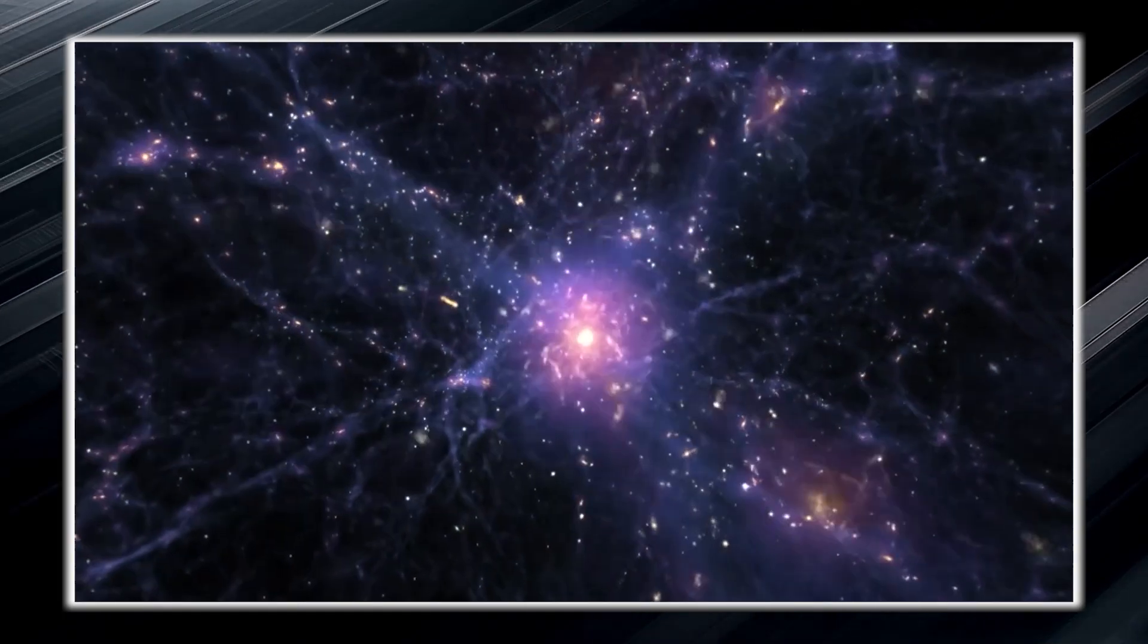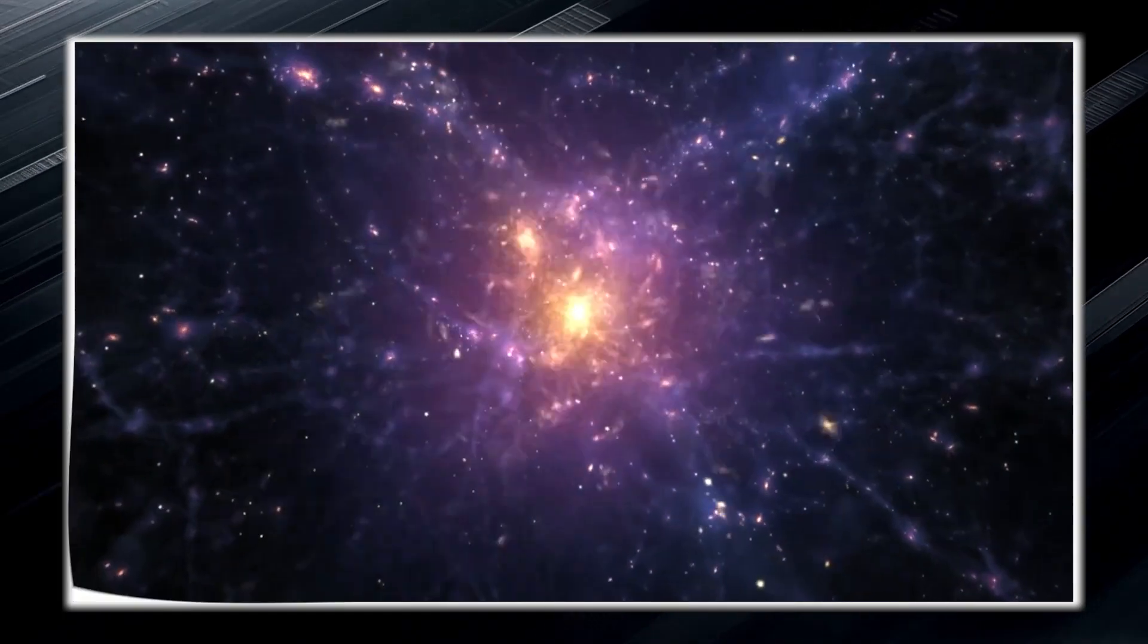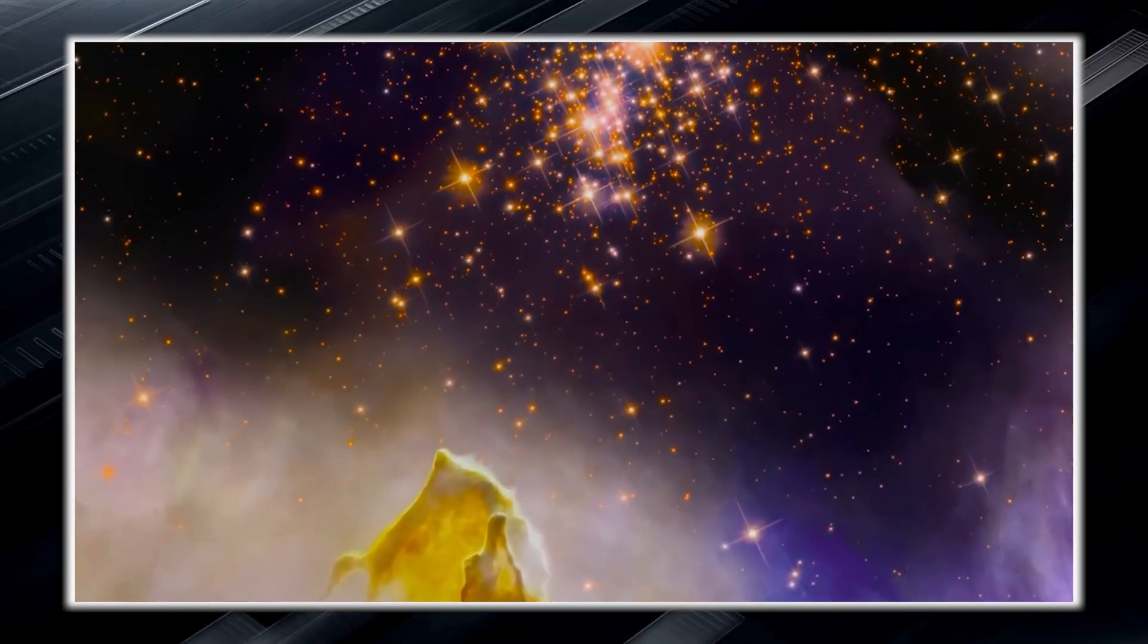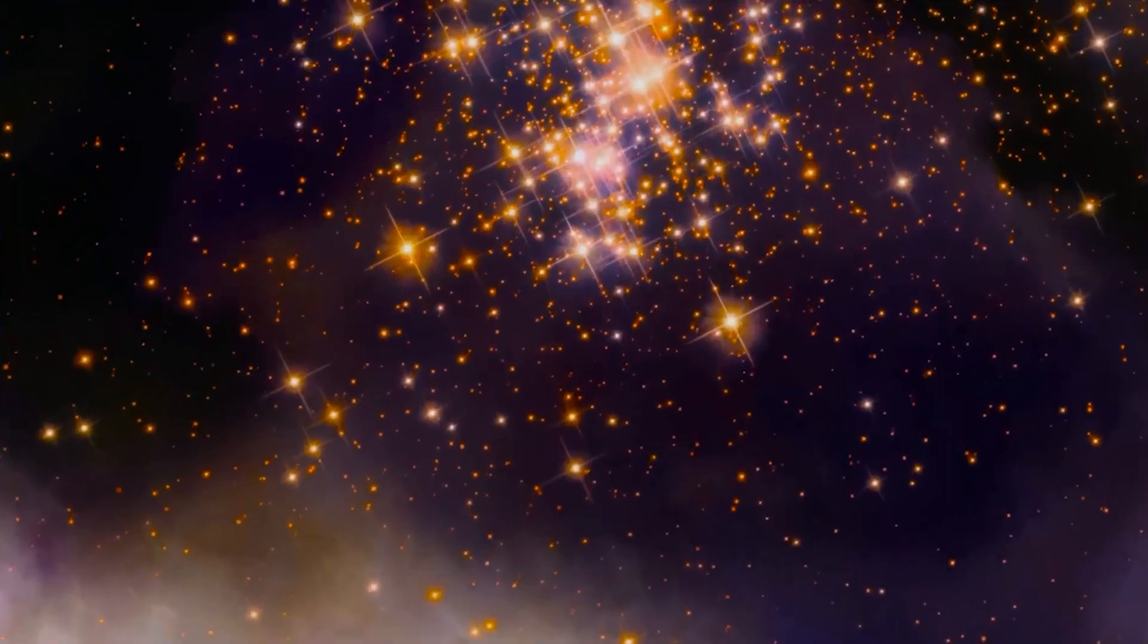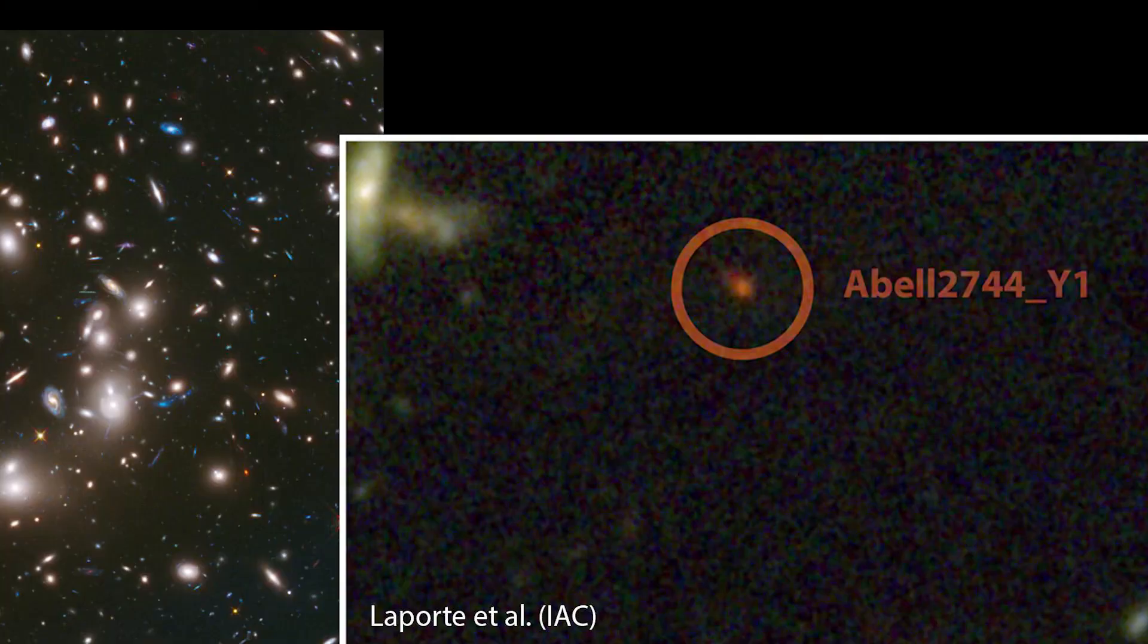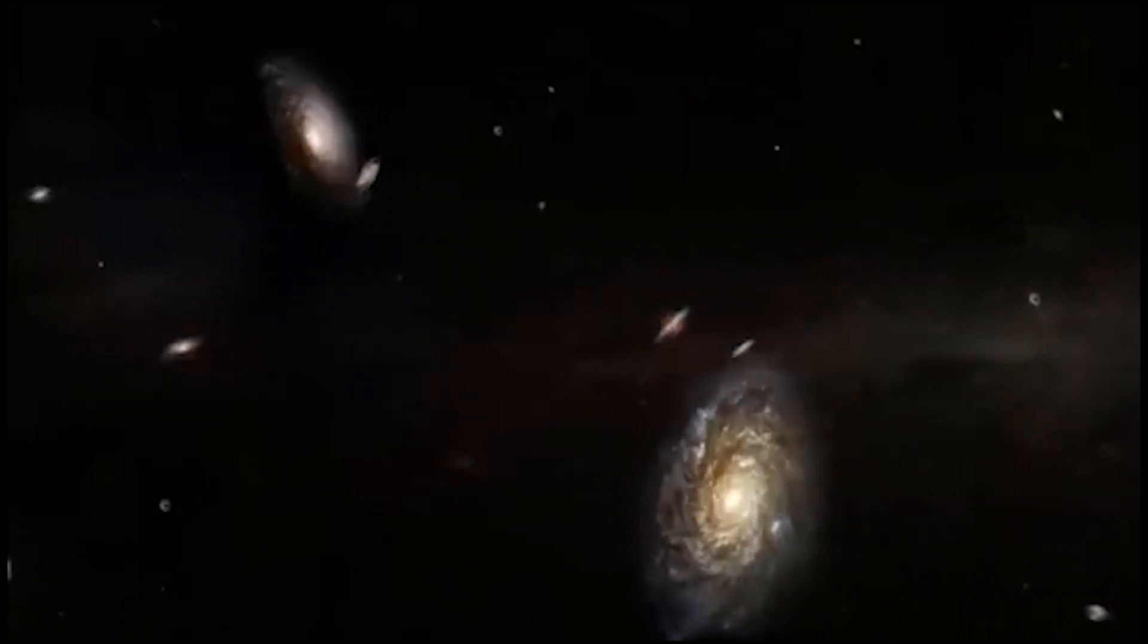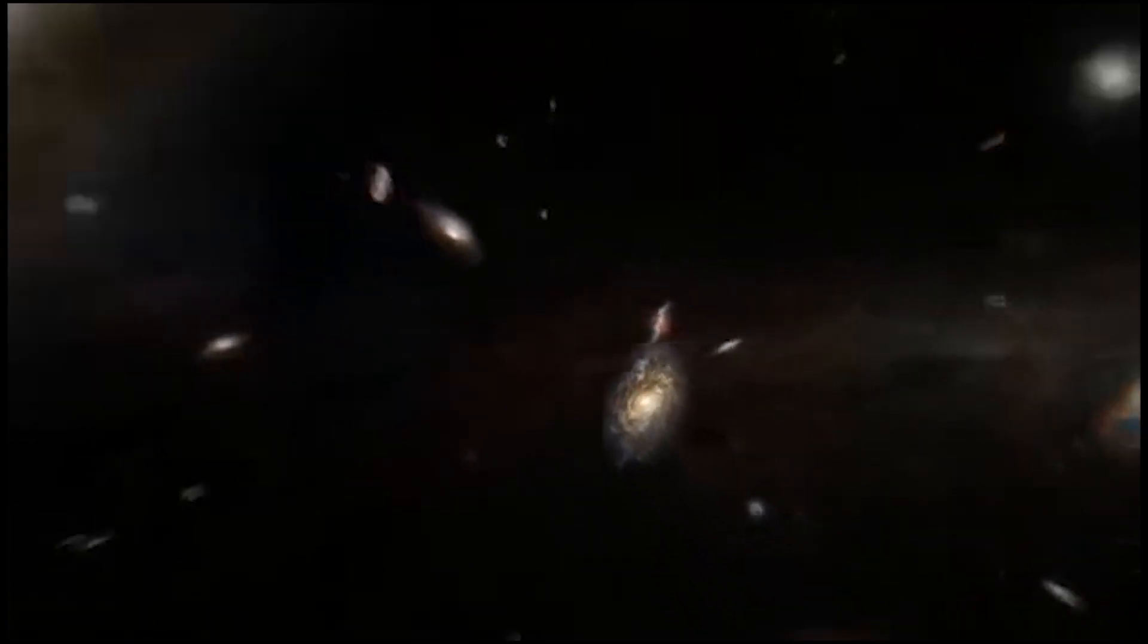What is truly amazing about this galaxy is not only its age and remoteness, but also its incredible rate of star formation. Despite being only 50 times smaller than our own Milky Way, Abel 2744Y1 generates stars at a rate 10 times faster than our own galaxy. This accelerated rate of star production is typical of galaxies that existed in the early days of the early universe.